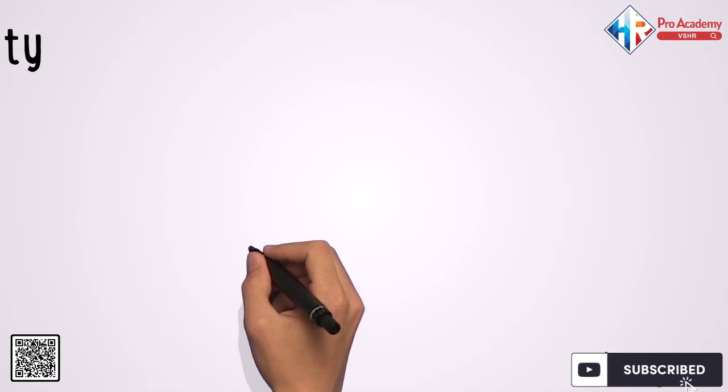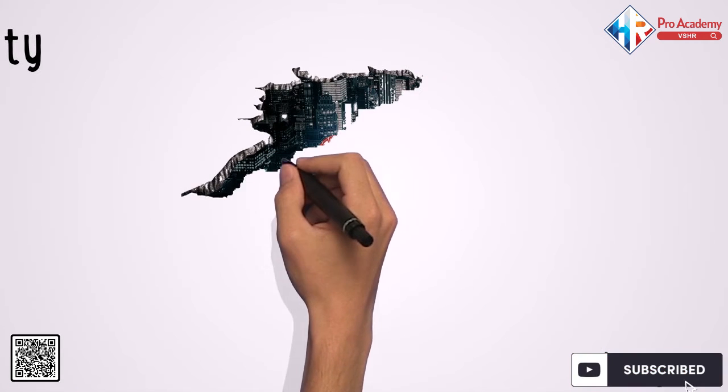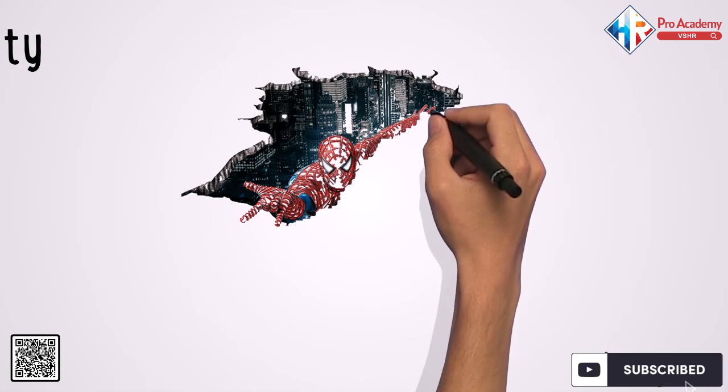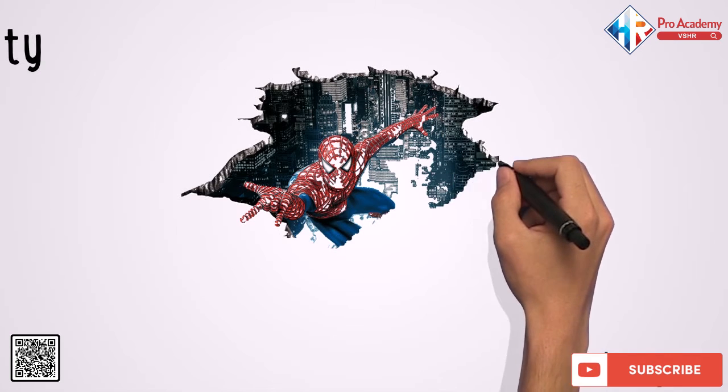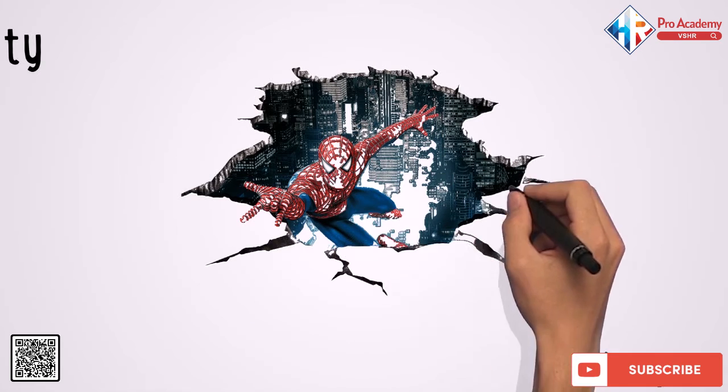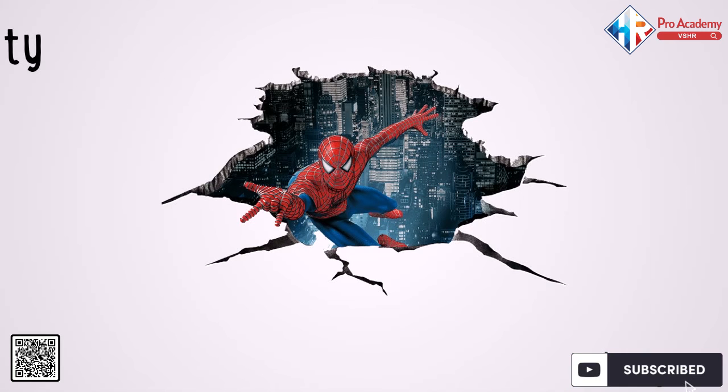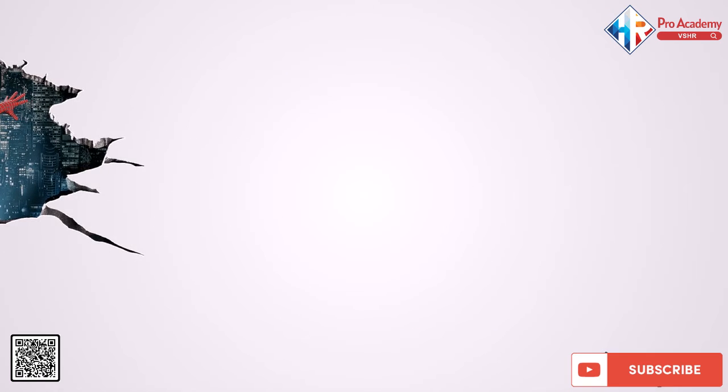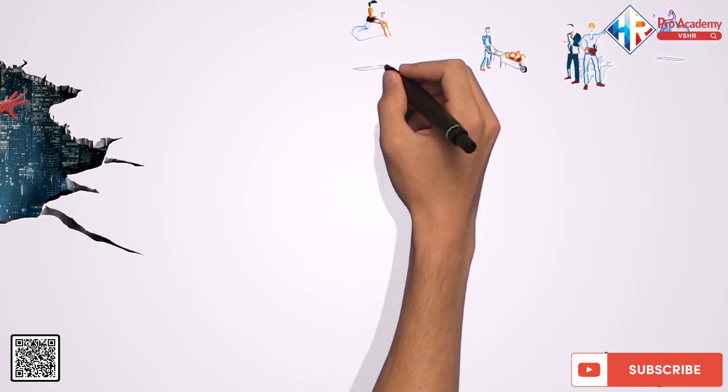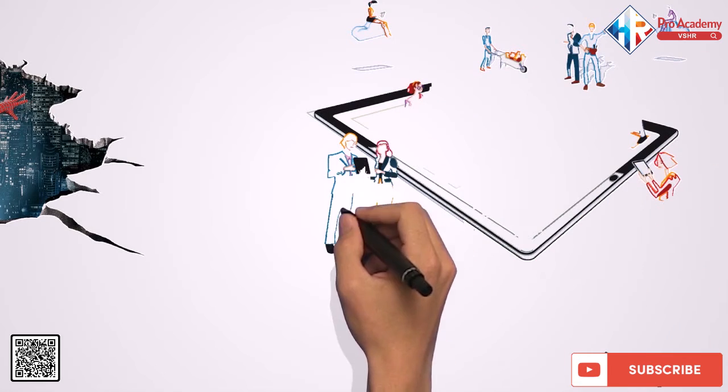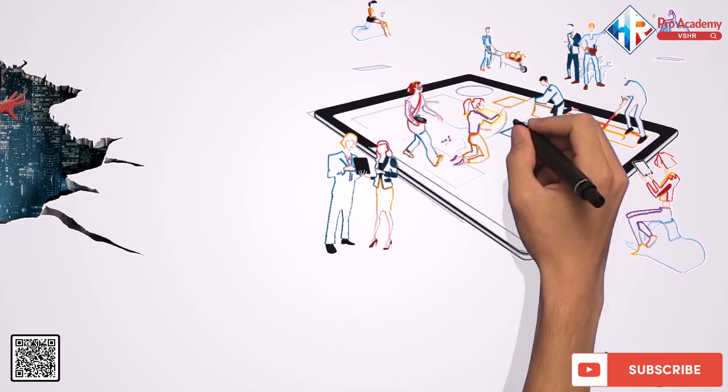The definition of augmented reality is a way of superimposing the digital world onto the actual world. You may overlay images to the actual world using cameras, computers, and phones, such as displaying a 3D representation of your design on your desktop. Being able to examine the model from all sides helps you to see issues that would otherwise go undiscovered.